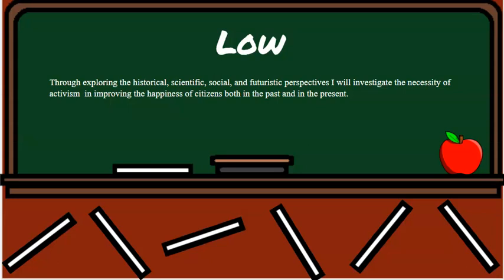Let's take a look at a low-performing example. The student made choices attempting to communicate about lenses or disciplines: 'Through exploring the historical, scientific, social, and futuristic perspectives, I will investigate the necessity of activism in improving the happiness of citizens in both the past and the present.' This is entirely too broad — how are we supposed to cover all of this information in only 2,000 words, which is our limit for the individual written argument?